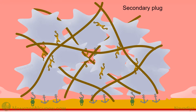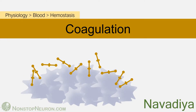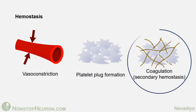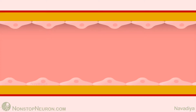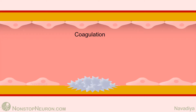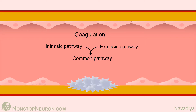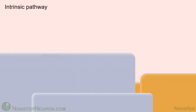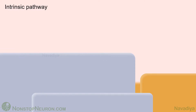So that was about platelet plug formation. In this next section we will see blood coagulation. It is one of the mechanisms of hemostasis and usually occurs parallel to platelet plug formation. After injury, the break in the vessel wall is initially sealed by platelets forming the primary platelet plug. Coagulation then converts this plug into a definitive clot. It starts by two pathways: the intrinsic pathway and the extrinsic pathway, both of which merge at the common pathway. First, the intrinsic pathway. It takes place on the negatively charged surface of activated platelets and is called intrinsic because it starts with factors that lie within the blood.